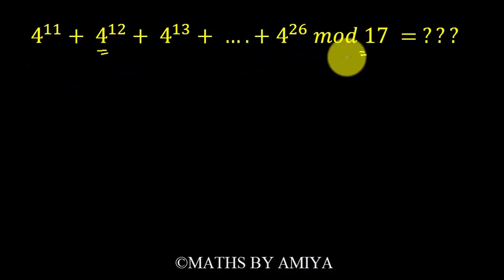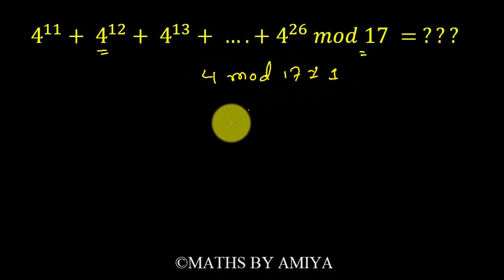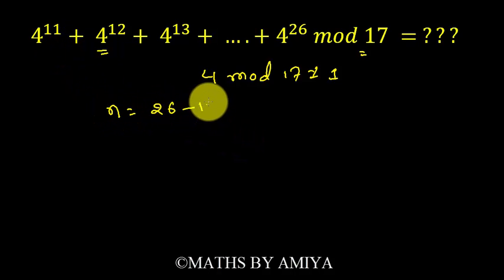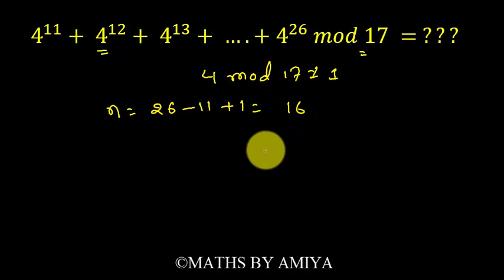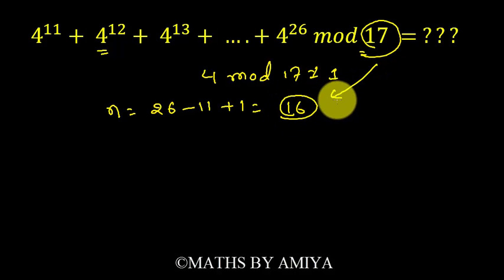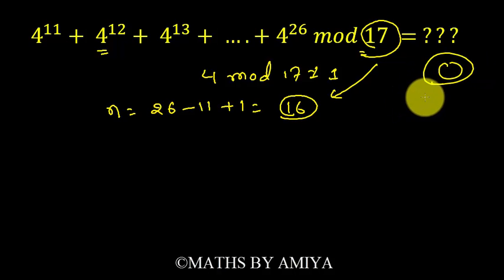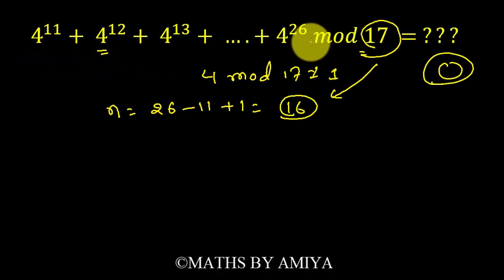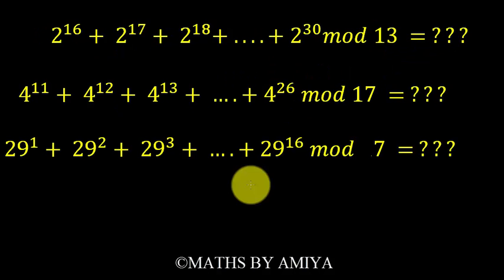Now solve the second question of the same type. First, check: 4 divided by 17, is the remainder 1? No. So we can apply the concept. Total number of terms is last minus first plus one, which equals 16. Since we are working with 17, p minus one is 16. The total number of terms is exactly 16, which is p minus one, so the remainder should be zero.